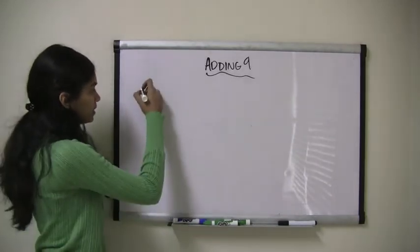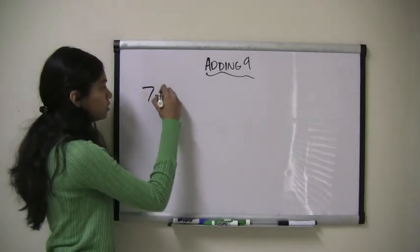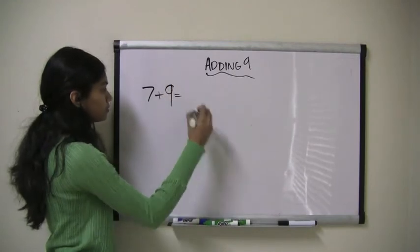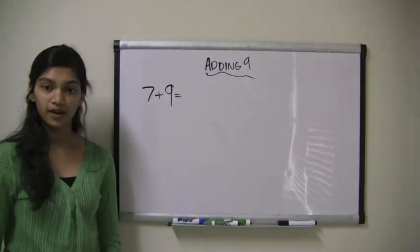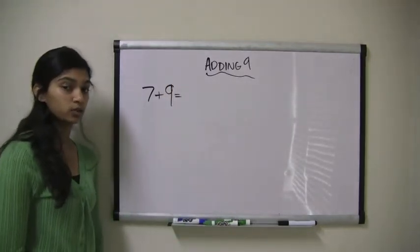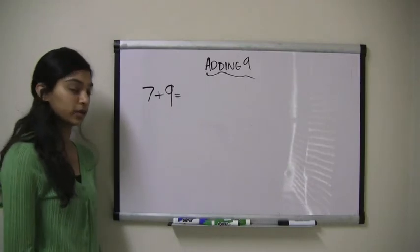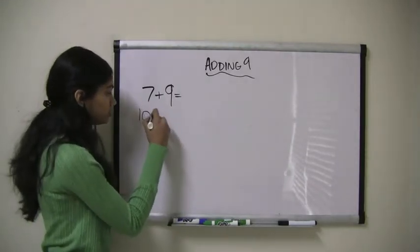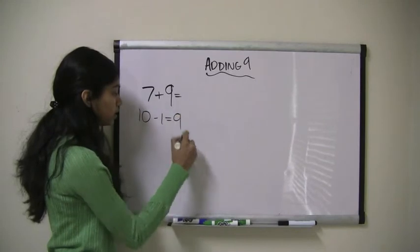So let's take an example. Let's say we have 7 plus 9. So we're going to use the fact that 10 minus 1 equals 9 to help us solve this problem quickly. So 10 minus 1 equals 9.